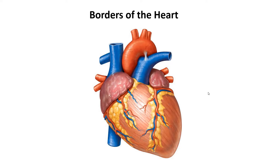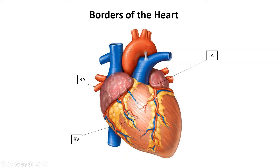Before we talk about the borders, let's talk about parts of the heart. This pink fleshy thing right here is the right atrium, and this right here is the left atrium. This fleshy part is the right ventricle, and this part is the left ventricle. Both ventricles are separated by a groove called the interventricular groove.